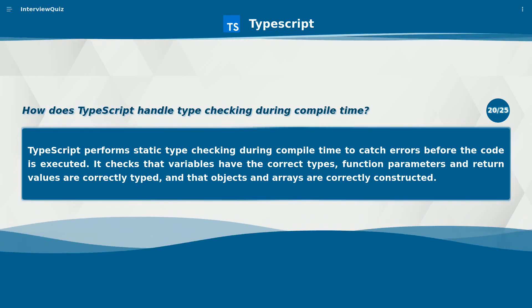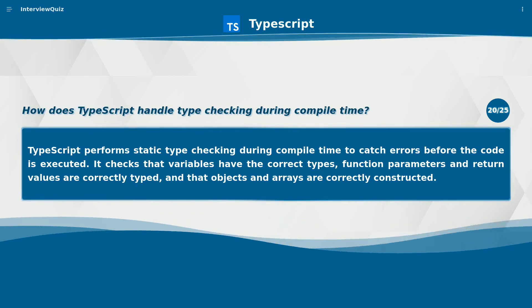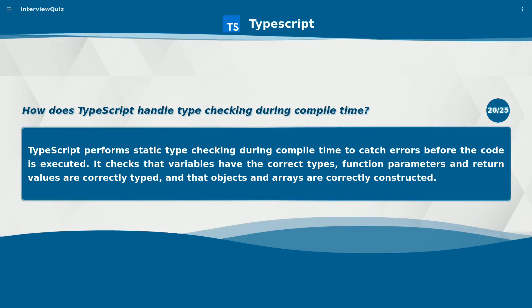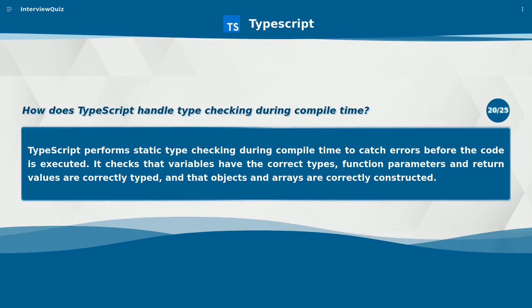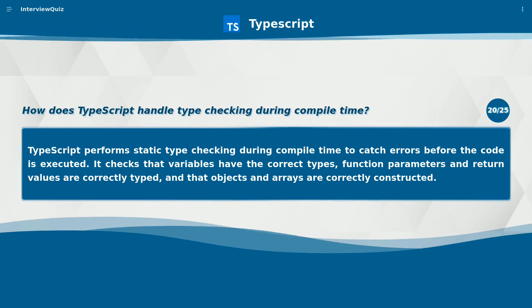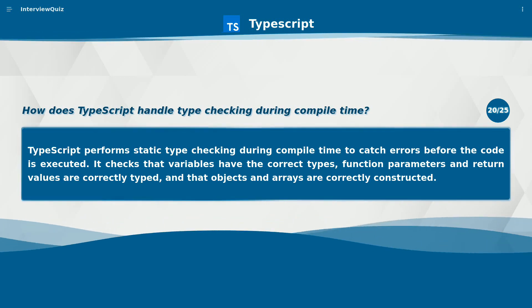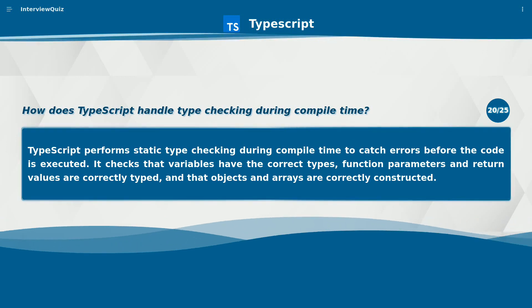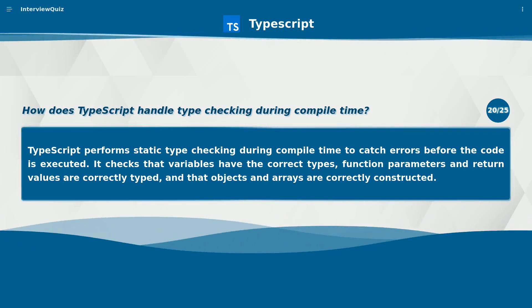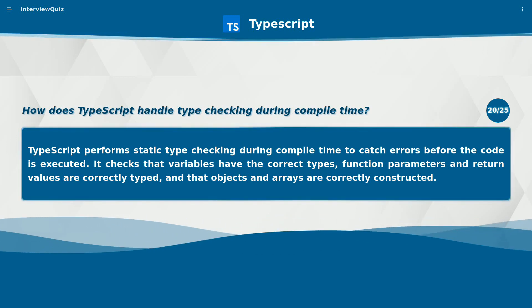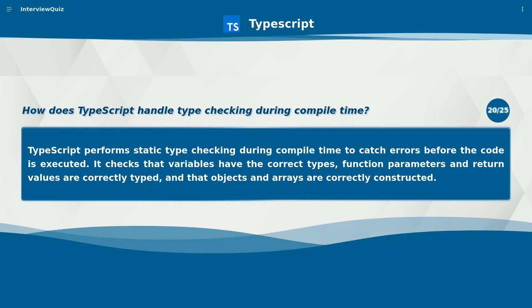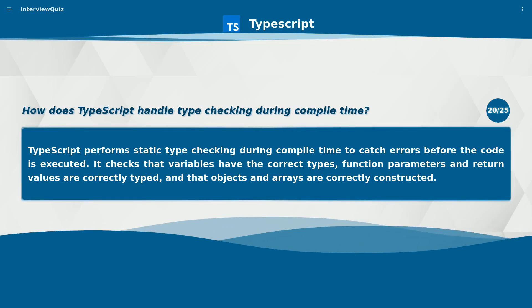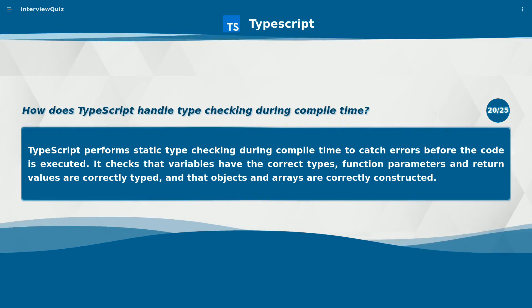How does TypeScript handle type checking during compile time? TypeScript performs static type checking during compile time to catch errors before the code is executed. It checks that variables have the correct types, function parameters and return values are correctly typed, and that objects and arrays are correctly constructed.